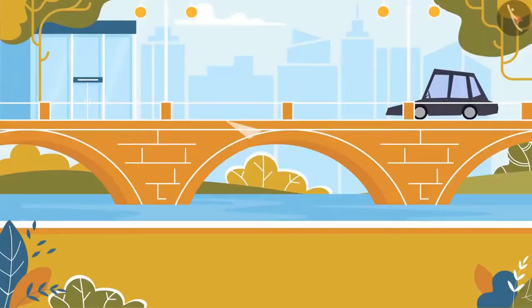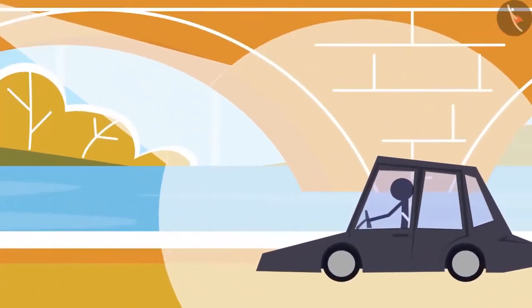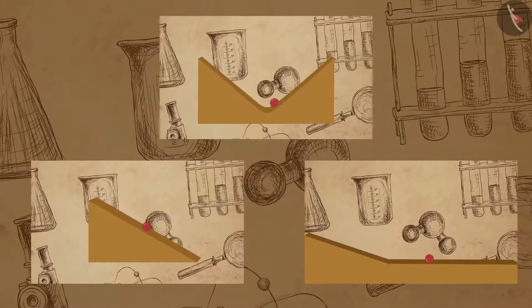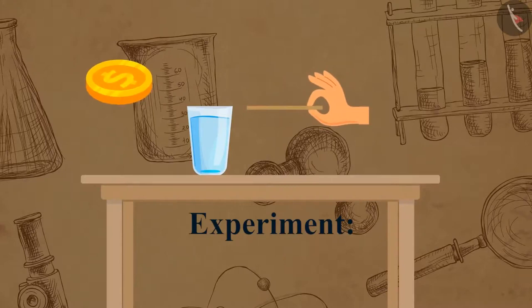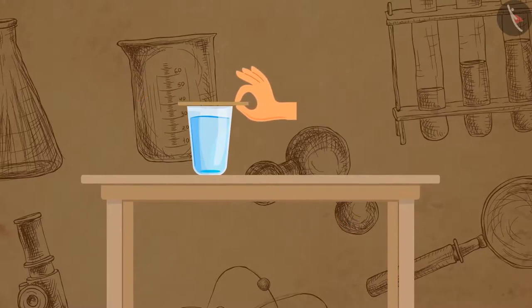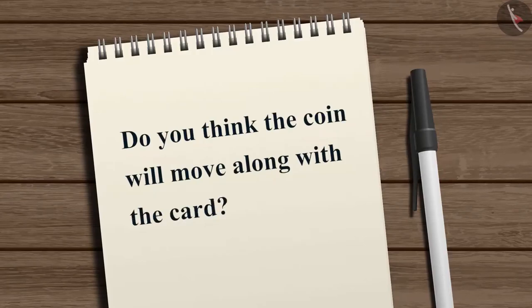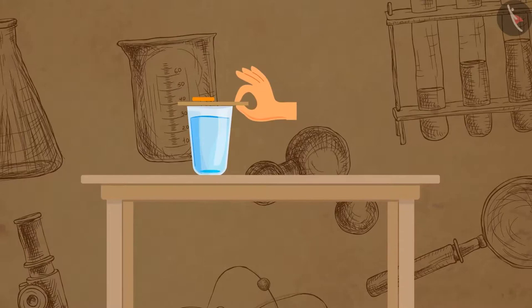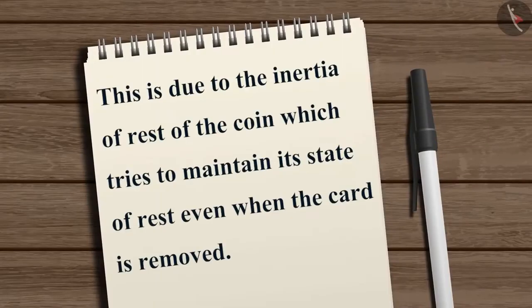Safety belts exert a force that opposes our forward motion and make it slower. Let us do another simple experiment to observe the effect of inertia. Take a glass, a card large enough to cover the mouth of the glass, and a coin. Place the card above the glass and place the coin on top of the card. Pull out the card as quickly as possible. If you pull it really fast, the coin falls vertically downward into the glass instead of moving along with the card, due to the inertia of rest of the coin.